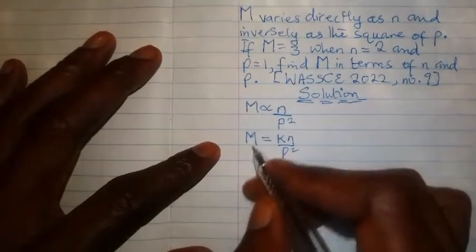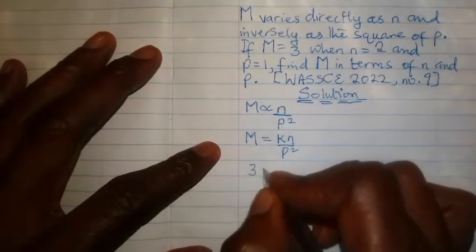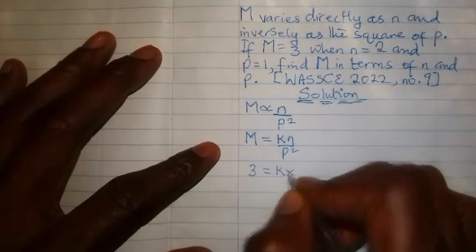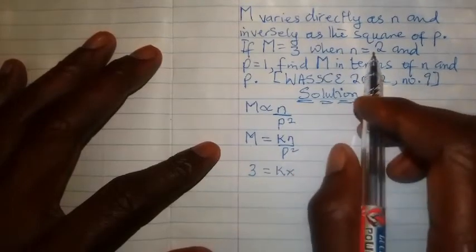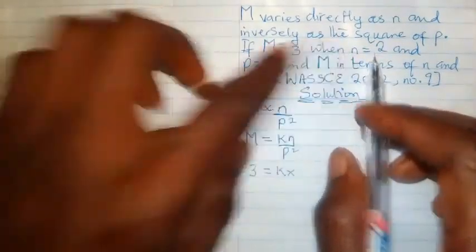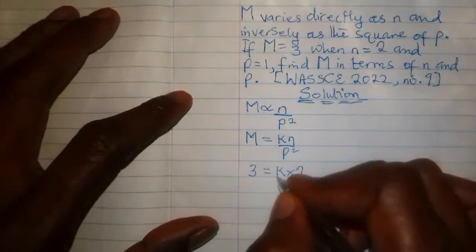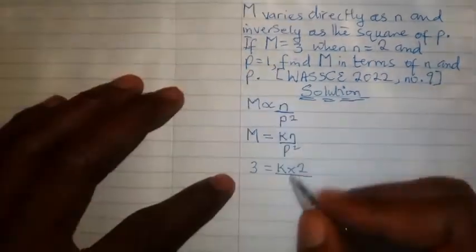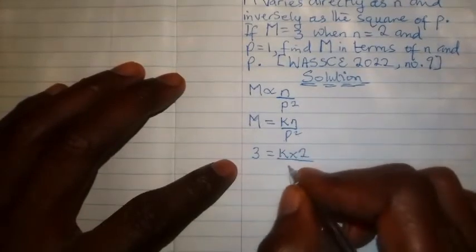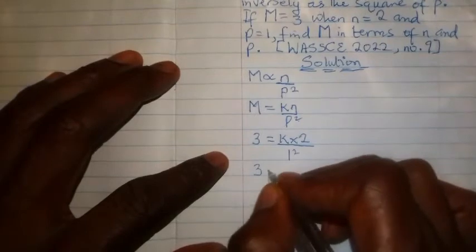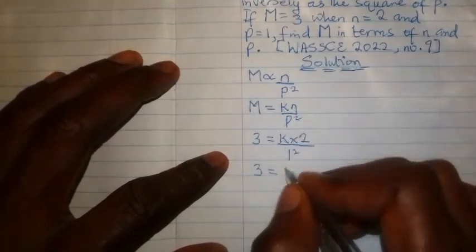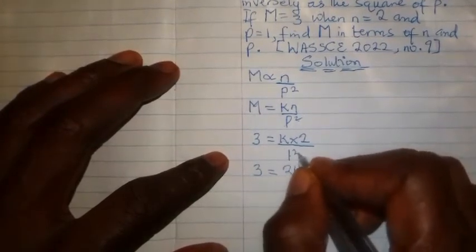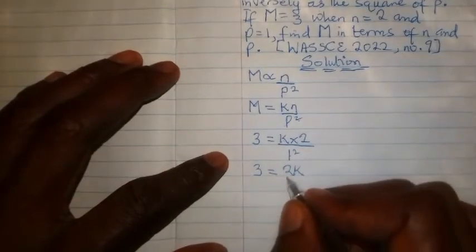us m as 3. You come here, you put m as 3 equals k multiplied by the values of n, which in this case you can see here is 2. We put 2 here, then divide by the value of p which is 1, and p carries the square so we say 1 squared. This will eventually give us 3 equals 2 times k, which gives us 2k. 1 squared means 1 times 1 which will